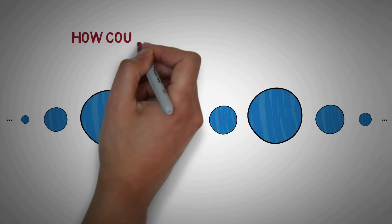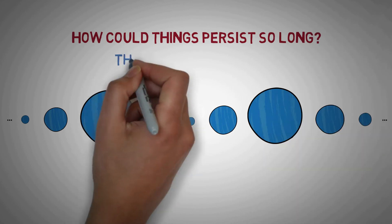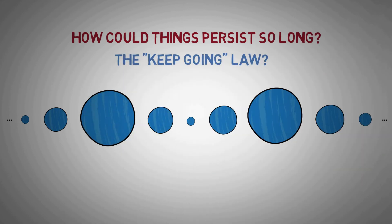But how can that be? How can things persist so long? If we suppose there are some laws that somehow forbid the annihilation of everything, what prevents those laws from ceasing to exist at any moment?